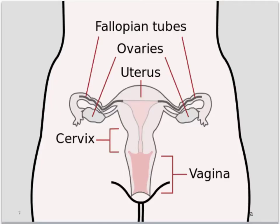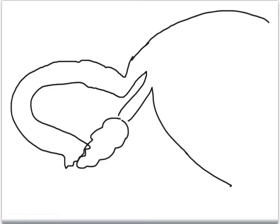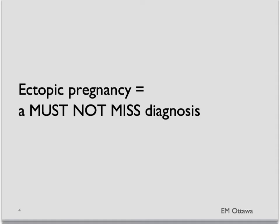Ectopic pregnancy refers to any pregnancy that is implanted outside the uterus. Most of these will be in the fallopian tubes. As you can see, there is limited space in the fallopian tube. As the pregnancy keeps growing, at some point it ruptures. The patient then bleeds into the pelvis and can quickly lose a lot of blood. Because of that, ectopic pregnancy is a cannot-miss diagnosis in the emergency department.